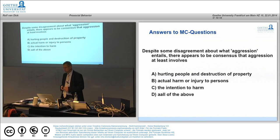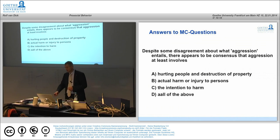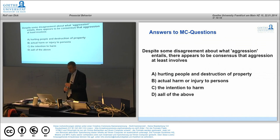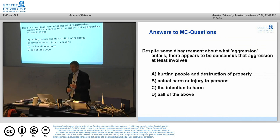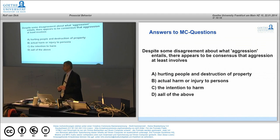Last week we talked about aggression and violence. Despite some disagreement about what aggression entails, there appears to be consensus that aggression at least involves hurting people and destruction of property, actual harm or injury to persons, the intention to harm, or all of the above.